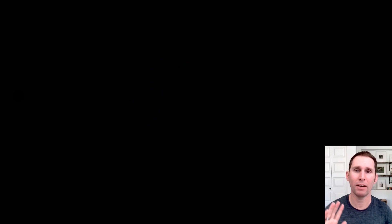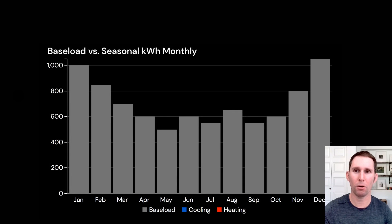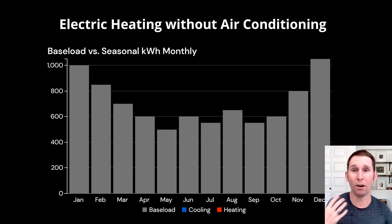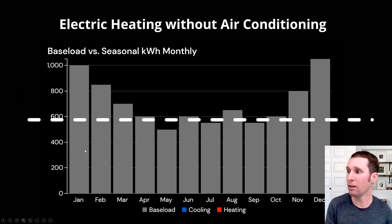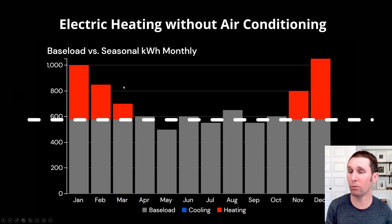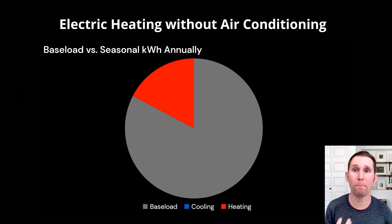Let's look at another profile to deepen your understanding of how this works for your home. Take a look at this month-by-month electricity usage. What I see is an electric home that has electric heating but does not have air conditioning. I'm drawing my baseload line on the average of the lowest three months. Everything below that is used consistently throughout the year, and in the winter months I'm heating with electricity — so I can pull that usage into a pie chart and figure out what percentage goes to electric heating.